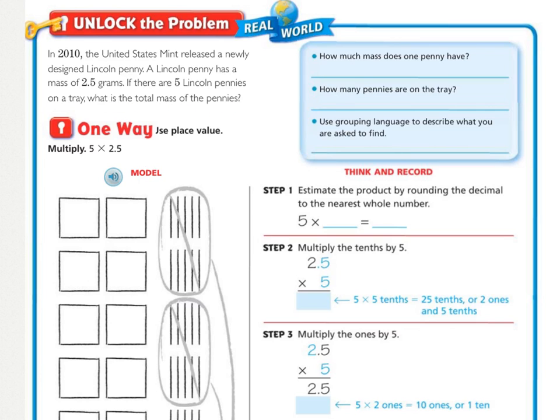Squiggle, underline what you're being asked to find, and circle the important information. Also, underline any keywords for what operation we will be doing. So, you should have squiggle, underlined what is the total mass of the pennies. Circled 2 and 5 tenths grams, and then circled 5. I used a different color because they're on top of each other for underlining total. That tells us that we are always going to be adding or multiplying. And since these are equal groups, we are going to be multiplying.